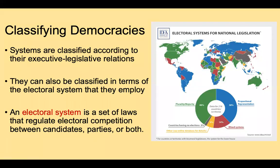Our starting point is this familiar question: how do we classify democracies? You'll remember that so far we've used executive-legislative relations to classify them. We've talked about parliamentary systems, presidential systems, semi-presidential or hybrid systems — all of these are differentiated based on the relationship between the executive branch and the legislative branch. But there are other ways of classifying democracies, and one other way is to think in terms of electoral systems.